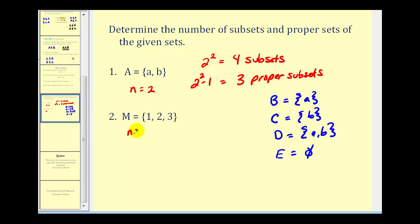For number 2, we have n equals 3. So 2 to the third would be the number of subsets. There are 8 subsets. And for the number of proper subsets, it's going to be 2 to the third minus 1. That will be 8 minus 1 or 7 proper subsets.